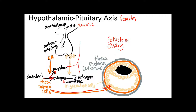Estrogen and progesterone both provide feedback inhibition — they block GnRH and block the anterior pituitary to keep hormone levels at just the right amount. However, once estrogen rises to a certain point, something different happens: instead of inhibiting, it actually stimulates the anterior pituitary.